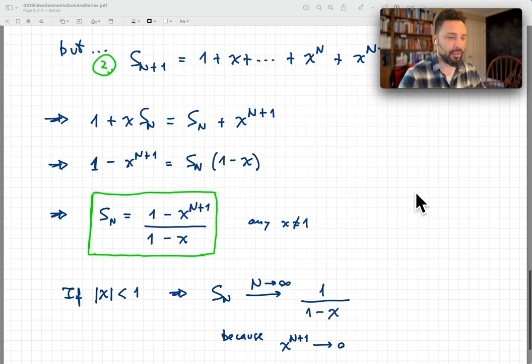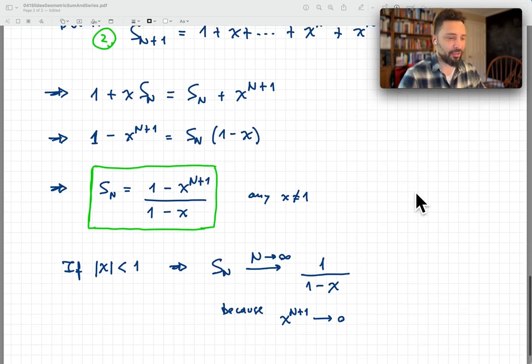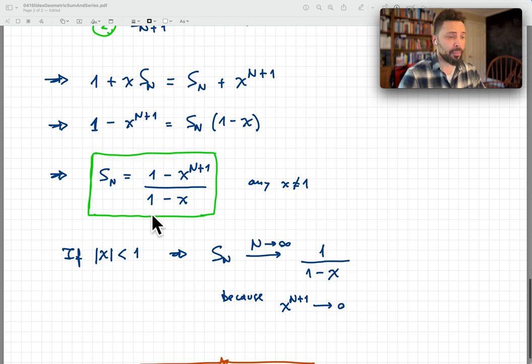Now, from this equation, if x in magnitude is less than 1, then we know that when we take n to infinity, the limit of this little number here is going to go to 0. And so if that goes to 0 as n goes to infinity, then the limit as n goes to infinity of S_n is just 1 over 1 minus x, and there's nothing else.